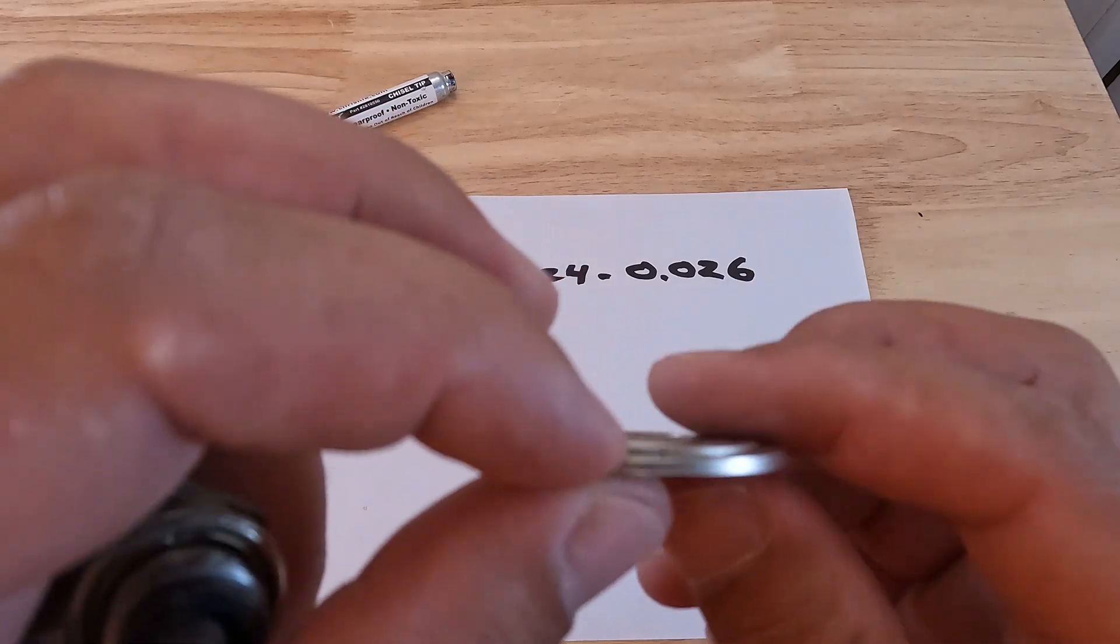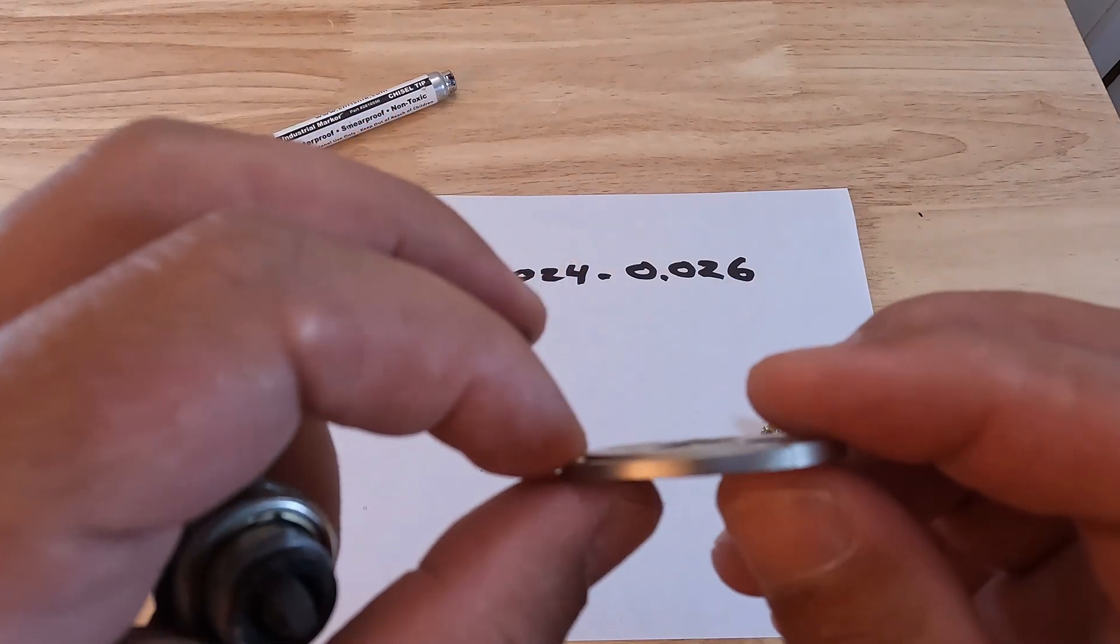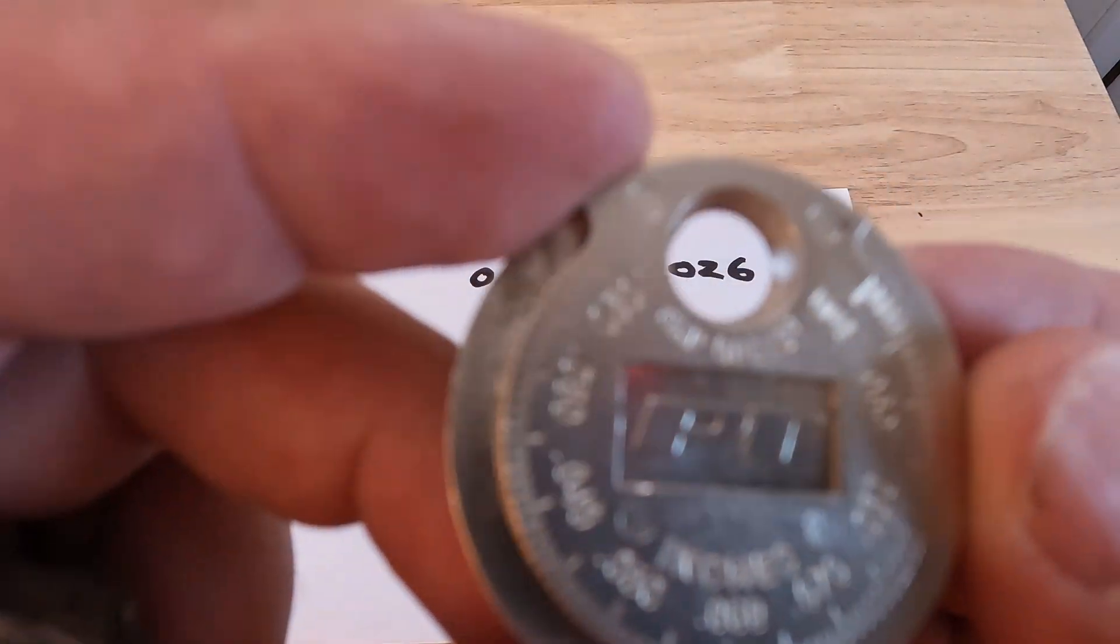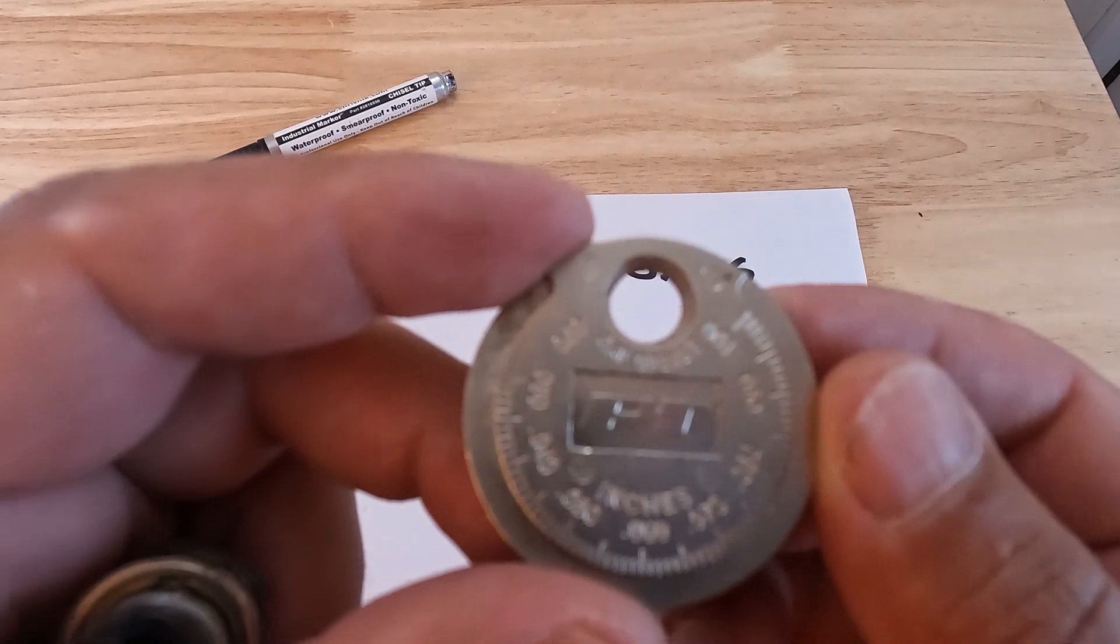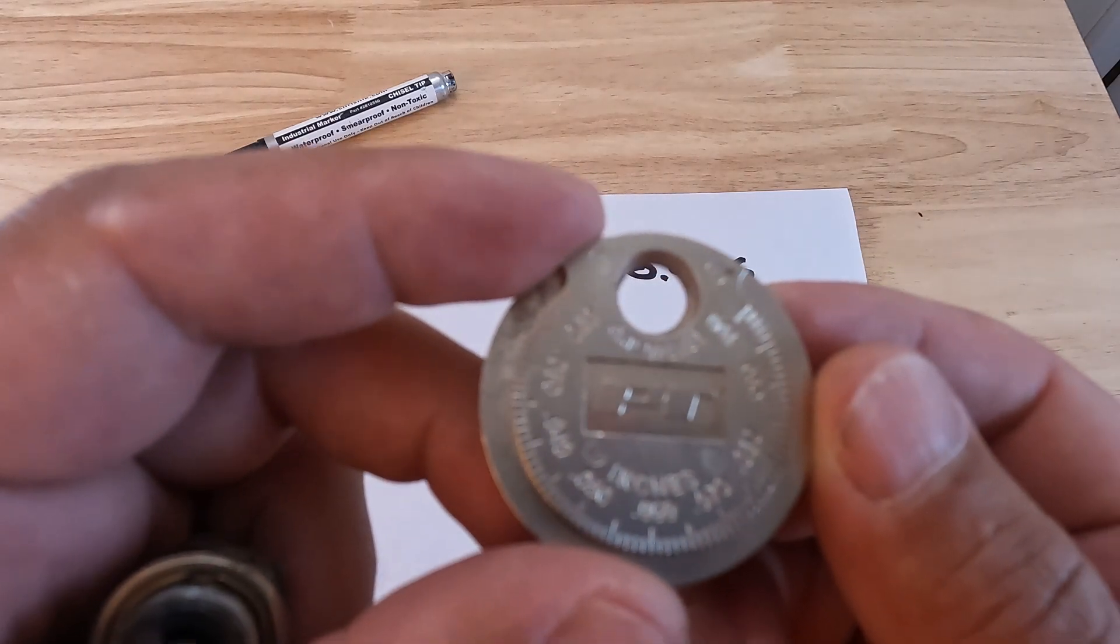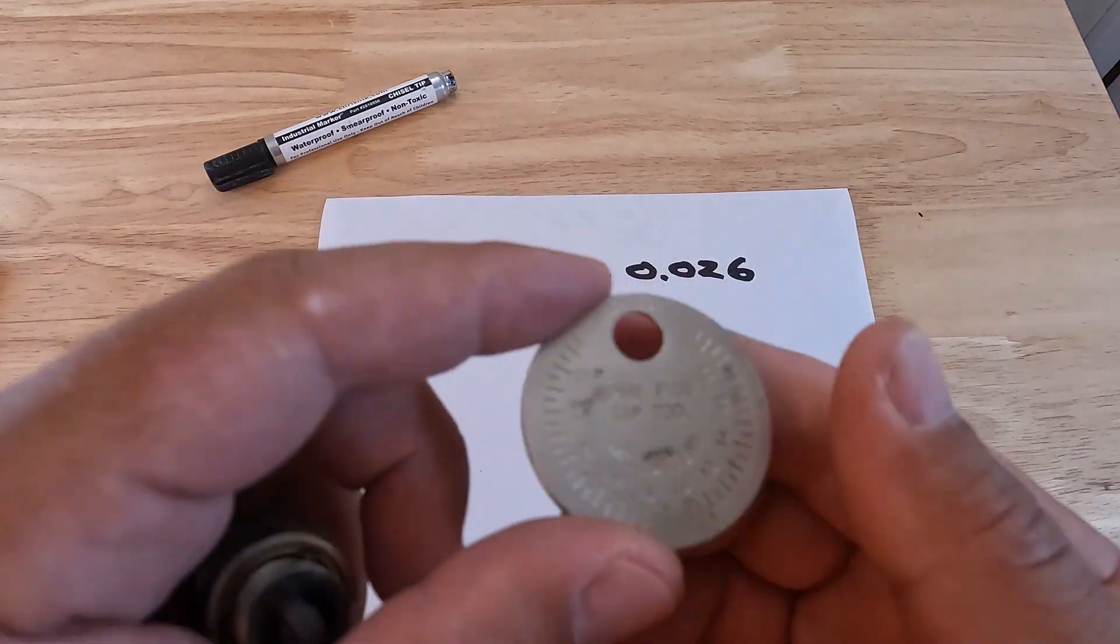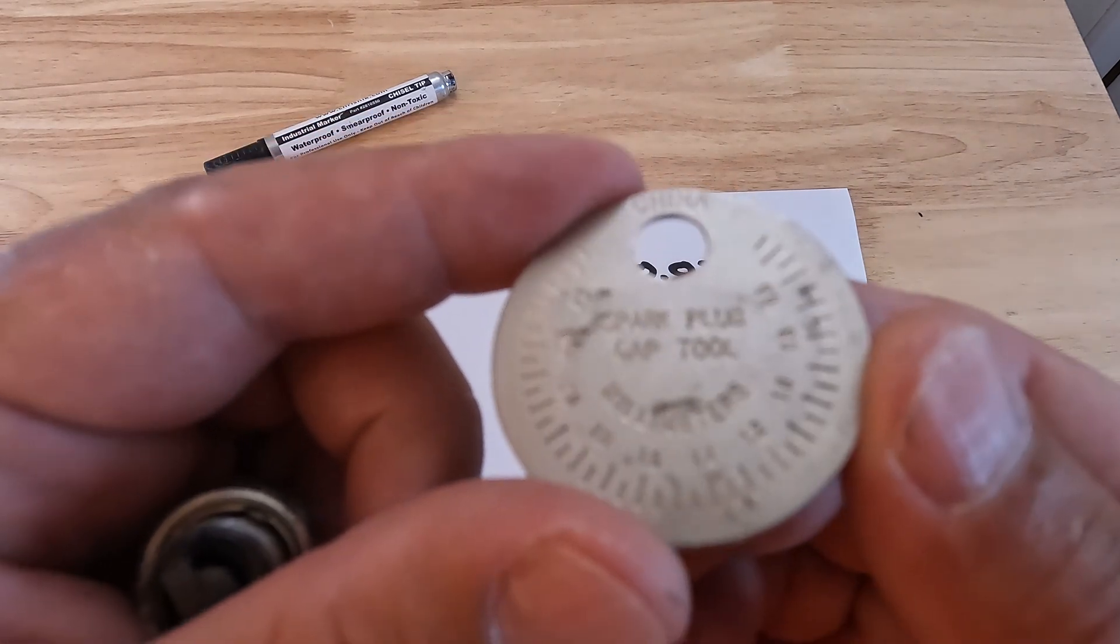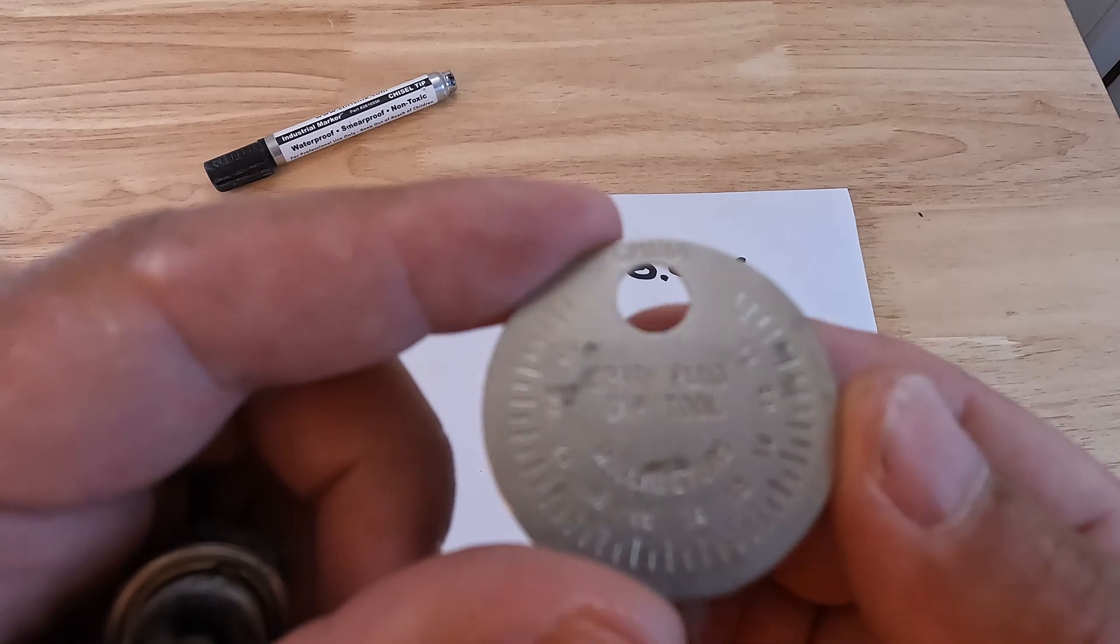Then the values, you can see this right here. This side is in inches if you're in the states, you're going to be using the inches side. And then if you're in another country, it gives you millimeters on the other side.